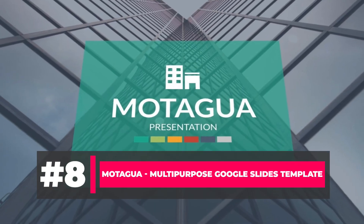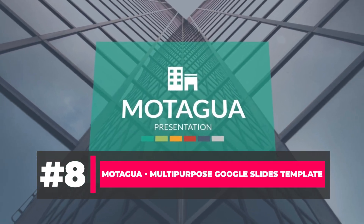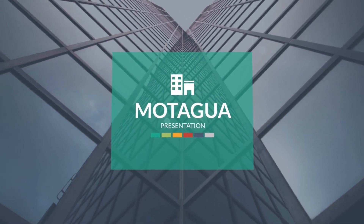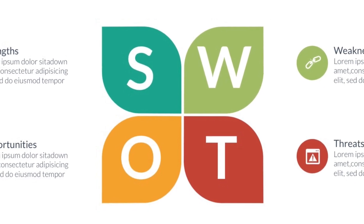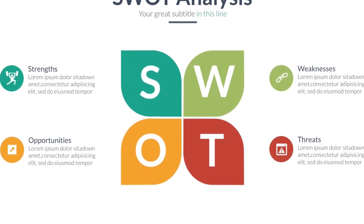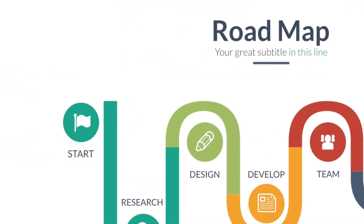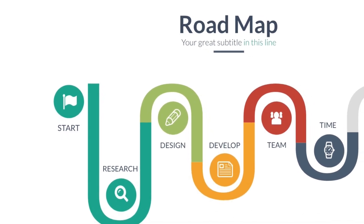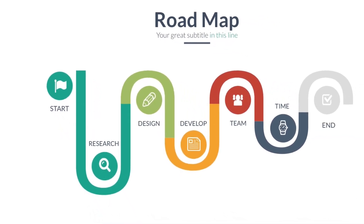Next up, let's look at Motagua. This is consistently one of the top templates on Envato Market, and it's not hard to see why. With more than 4,000 slides in total, you'll maximize your value when you use this template. That includes slides with classic infographics like a SWOT for strategy reviews or timeline and Gantt charts to plan projects. This template has everything you need to complete a presentation with enough infographics for advanced concepts.